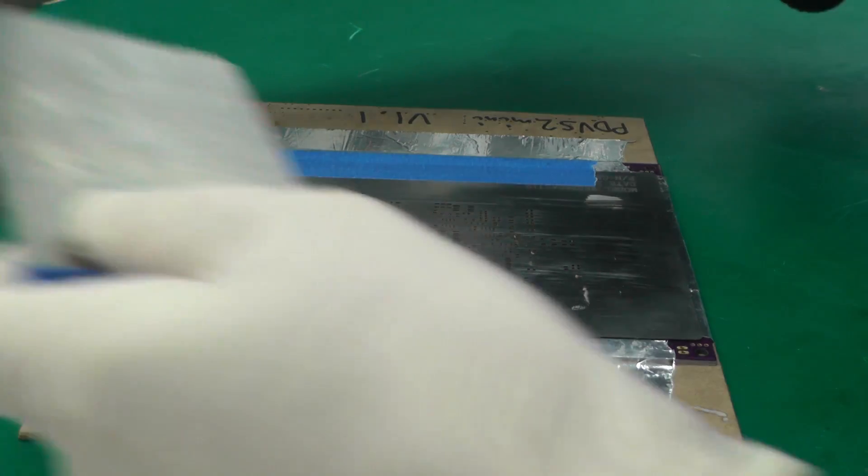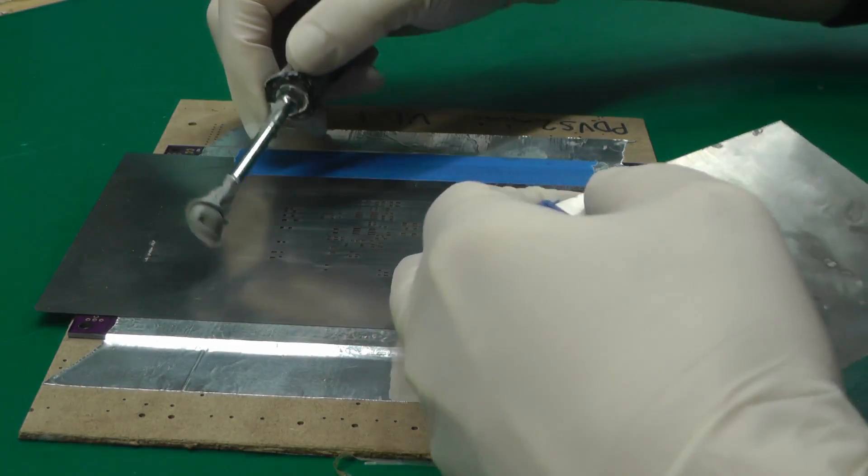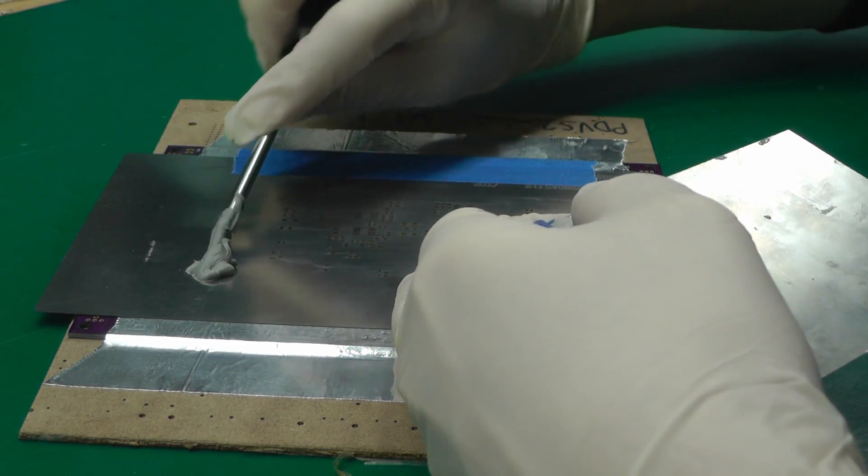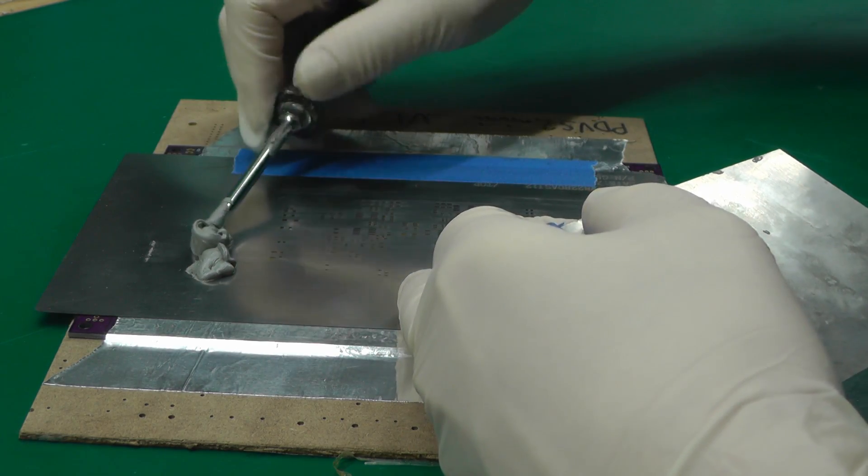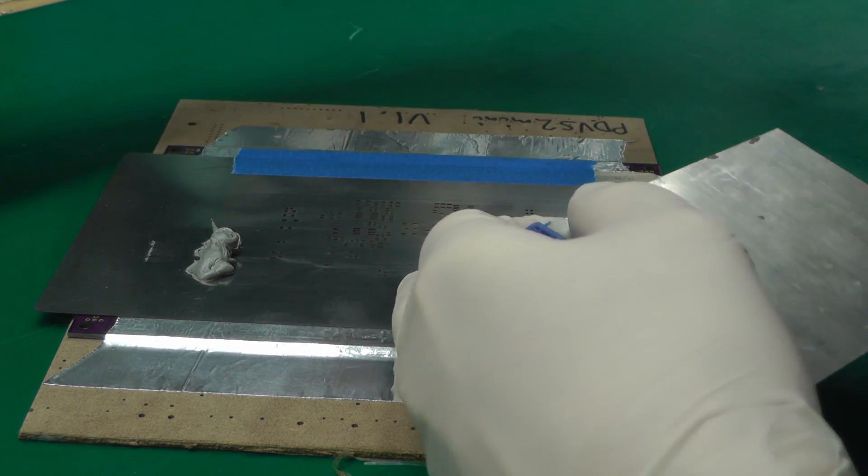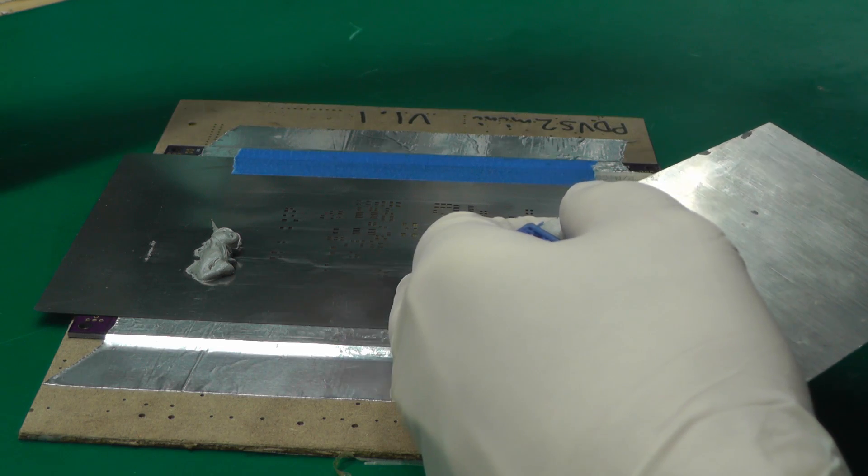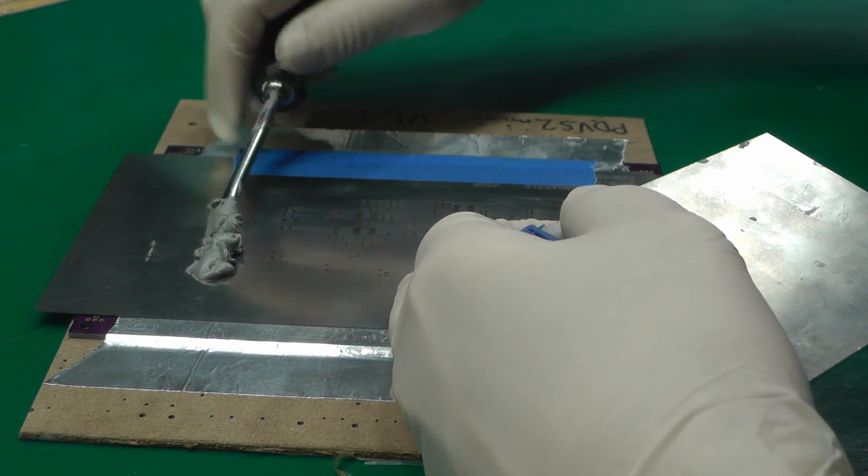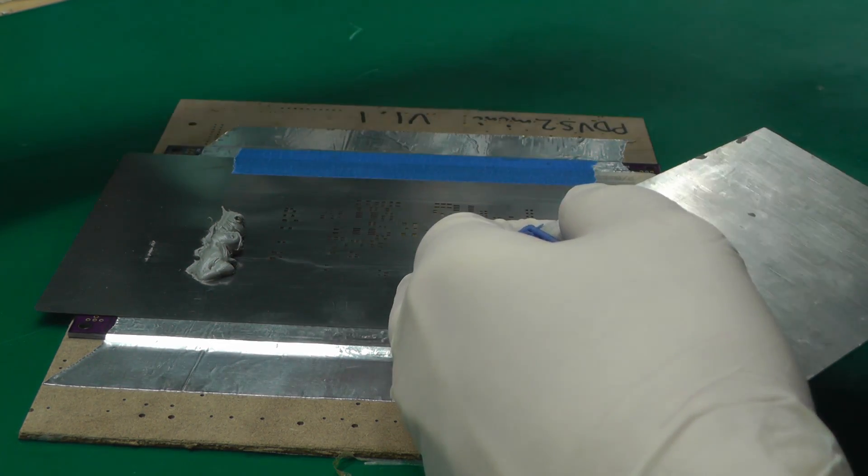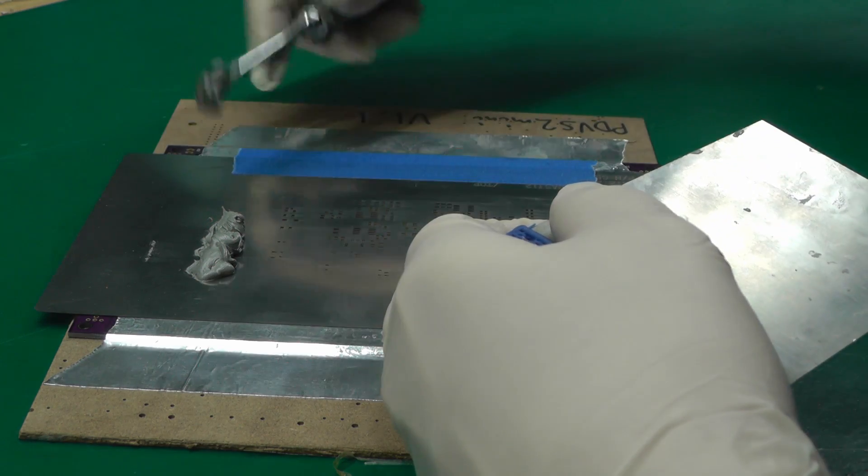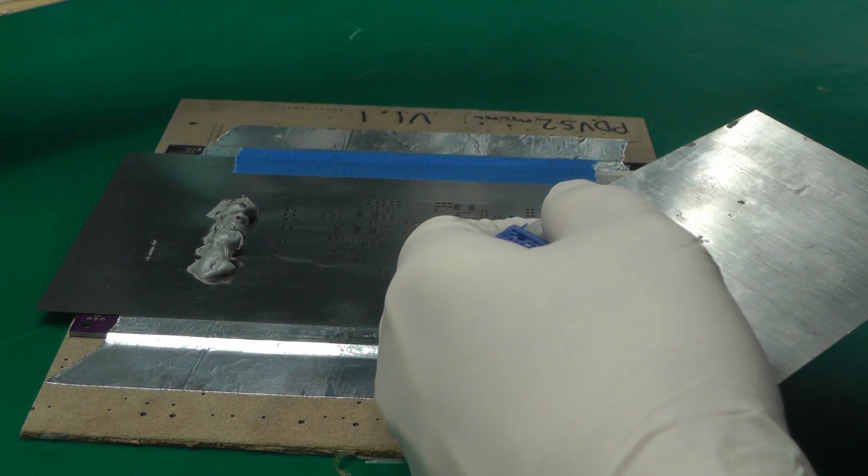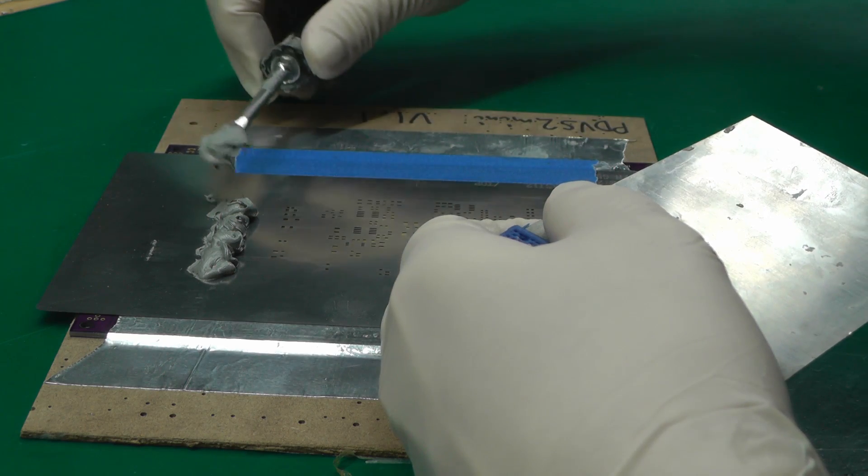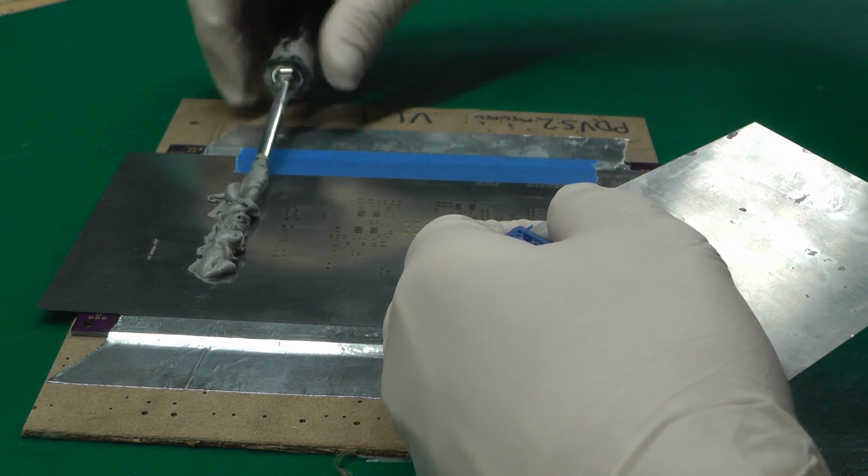Let me just apply some paste to the stencil. I'm using a screwdriver here, I should really find something a bit better than that, but it's kind of my favorite screwdriver for doing this. Get the paste out beyond the end of the last hole on the PCB.